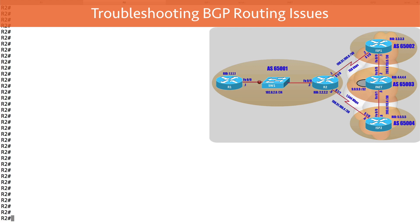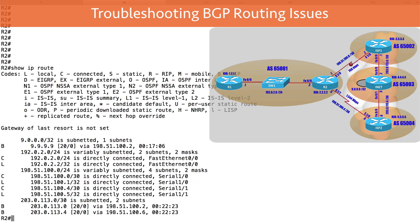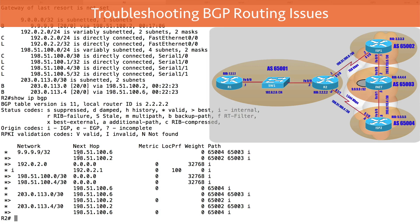Let's check what we're using right now. If I do a 'show IP route' on router R2, looking at 9.9.9.9/32 as an example internet destination — a loopback on my INET router — it shows we're going via 198.51.100.2, which is ISP1, the slower link. Let's look at the BGP table with 'show IP BGP'. BGP knows two ways to get there — via ISP2 or ISP1 — but the greater-than sign shows we're currently selecting ISP1.